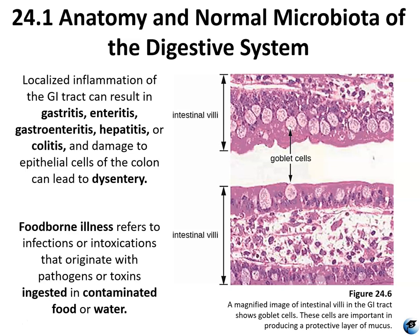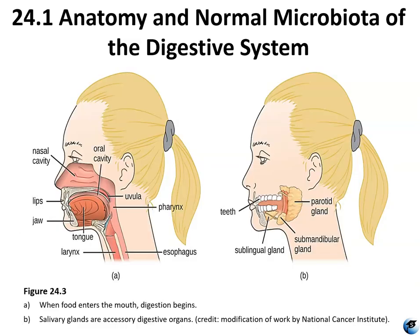There are several accessory digestive organs, including the tongue, the teeth, the liver, gallbladder, and pancreas. The teeth and the tongue are important accessory organs of the mouth that masticate food into small bits, while the salivary glands secrete salivary amylase, which aids in the digestion of starch.